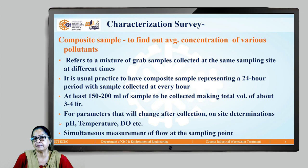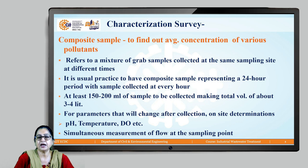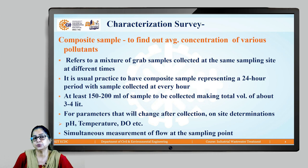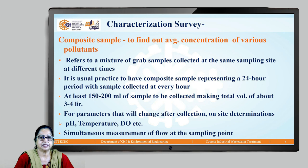Once the sampling duration is over, you have a mixture of samples collected over the time period. You mix the sample thoroughly, and parameters which change with time — pH, temperature, dissolved oxygen — are to be determined on site. After this, you write down the values of these parameters on the label of the sample, and then the sample is sent to the laboratory for further analysis. While taking the sample, simultaneously at the same location, we also measure flow — the flow of wastewater. So every time you collect a sample, there is a determination of flow.